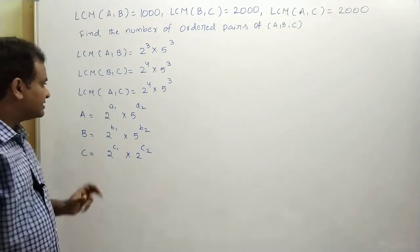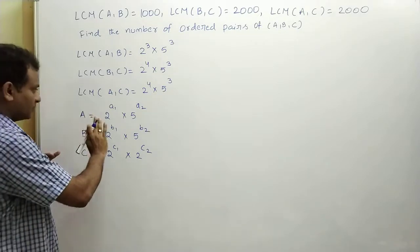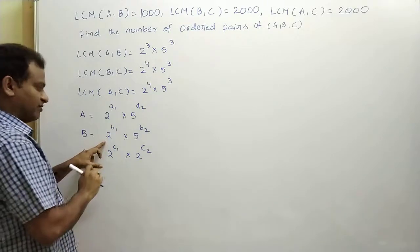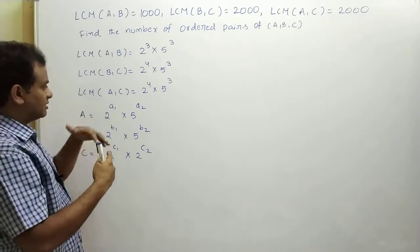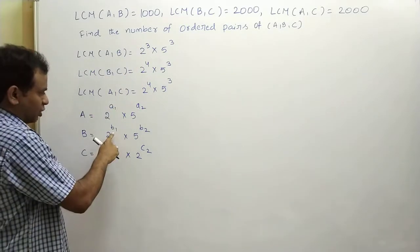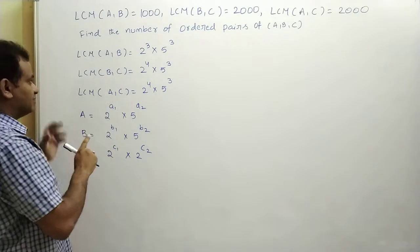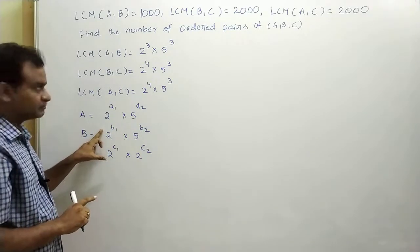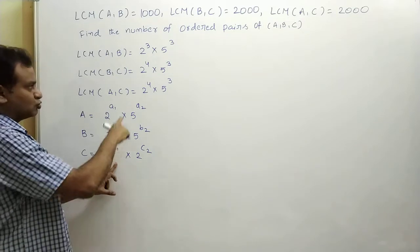Once the numbers are written in prime factorization format, LCM is found by taking the maximum power of each prime. For LCM of (a, b), the maximum of a1 and b1 gives the power of 2. In the question, 2 takes maximum power 3 in LCM(a,b), so one of a1 or b1 must equal 3. For LCM(b, c), 2 takes maximum power 4, so one of b1 or c1 must equal 4. Similarly for LCM(a, c), one of a1 or c1 must equal 4.